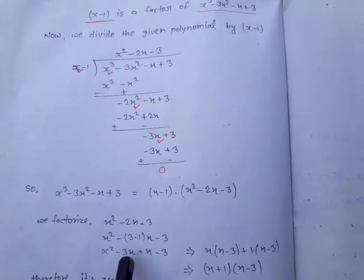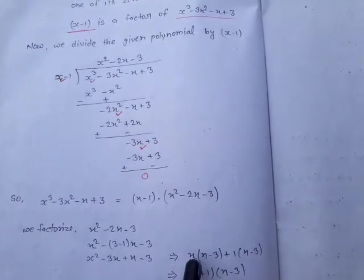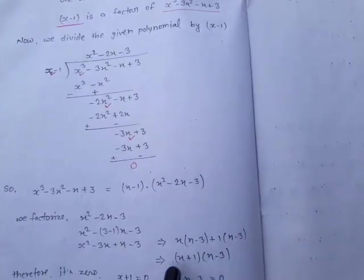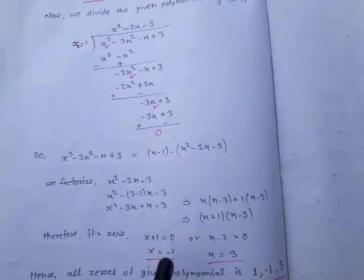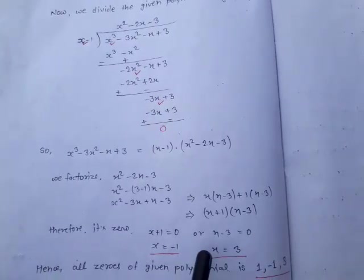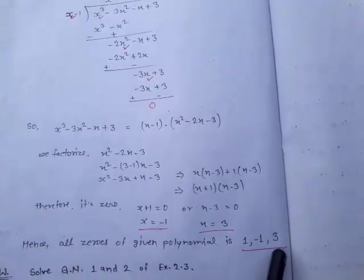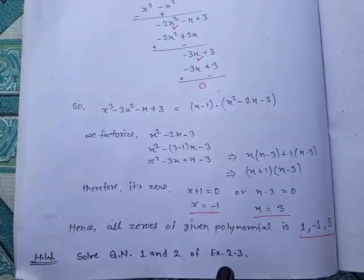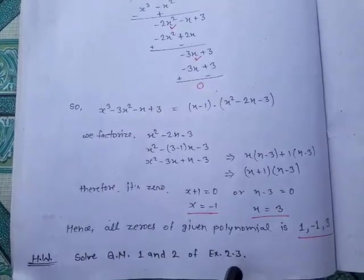Now factorize x² − 2x − 3: taking common factors, x(x − 3) + 1(x − 3) = (x + 1)(x − 3). So the two zeros are: x + 1 = 0 → x = −1, and x − 3 = 0 → x = 3. Therefore all zeros of the given polynomial are 1 (given), −1, and 3. Using this lecture you can solve homework questions 1 and 2 of exercise 2.3. Thank you.